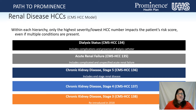Starting at the bottom with chronic kidney disease stage 3, going to CMS HCC 138; then chronic kidney disease stage 4, CMS HCC 137; then chronic kidney disease stage 5, CMS HCC 136, which includes end-stage renal disease. You have acute renal failure, CMS HCC 135, that includes complicated and unspecified acute renal failures. You also have dialysis status, CMS HCC 134, which includes complications of dialysis. There is also a disease coefficient interaction added for patients that have a qualifying renal condition and congestive heart failure.